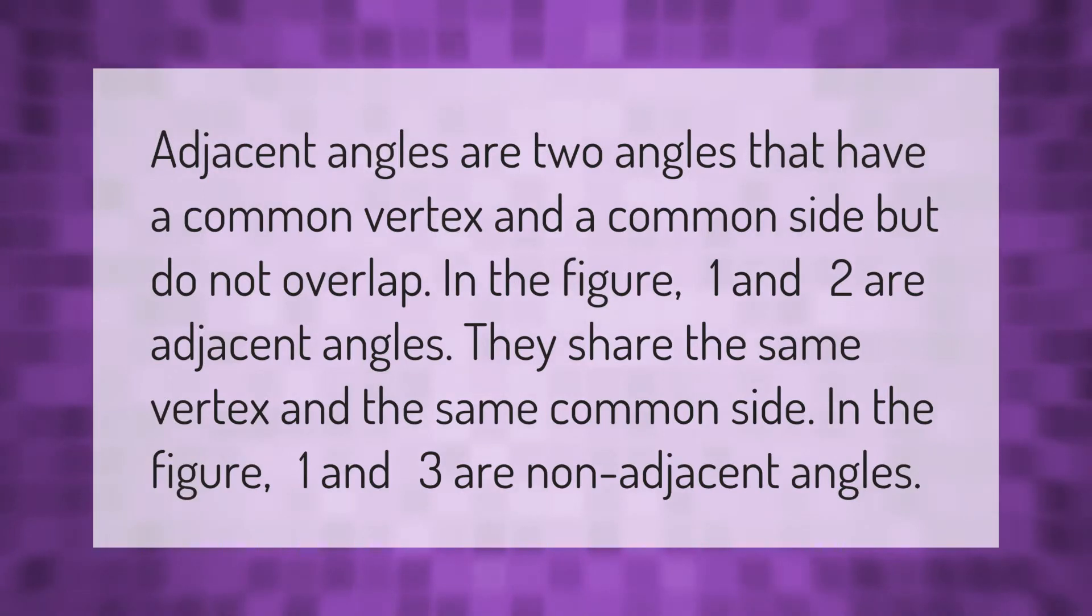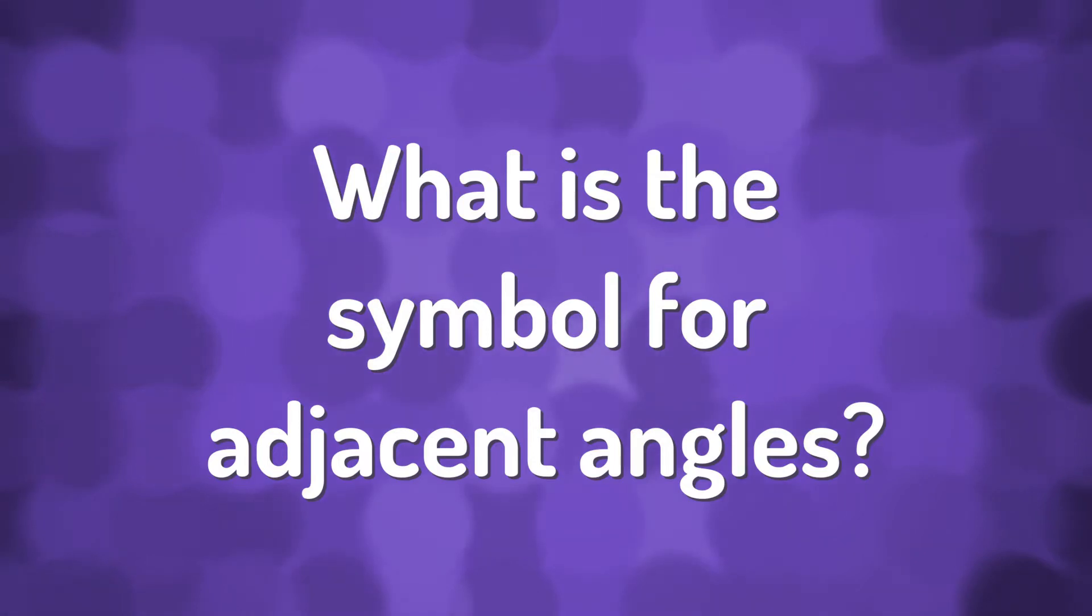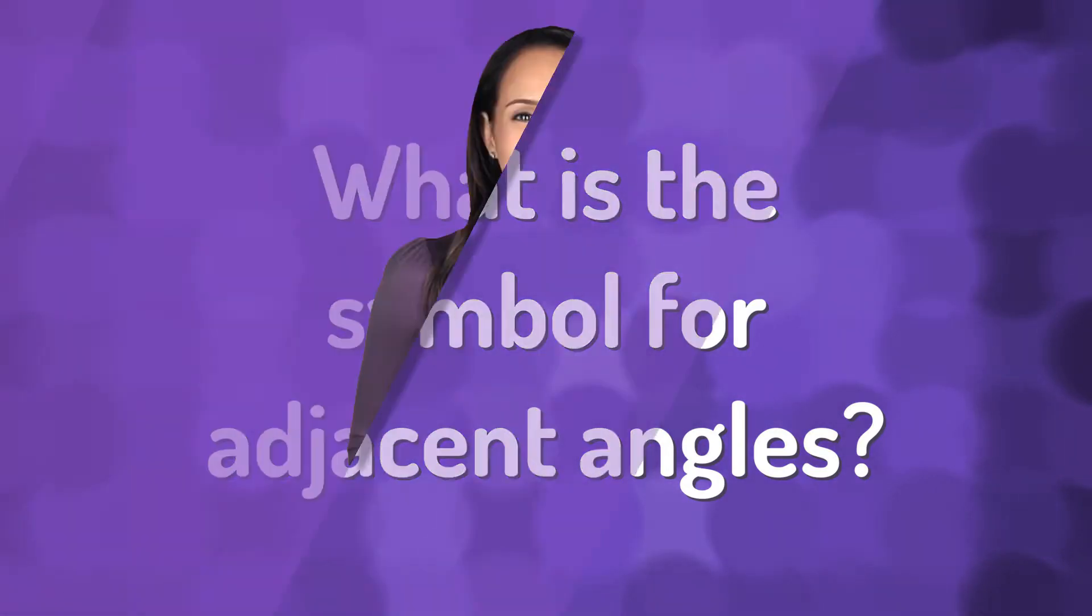Adjacent angles are two angles that have a common vertex and a common side but do not overlap. In the figure, 1 and 2 are adjacent angles. They share the same vertex and the same common side. In the figure, 1 and 3 are non-adjacent angles.